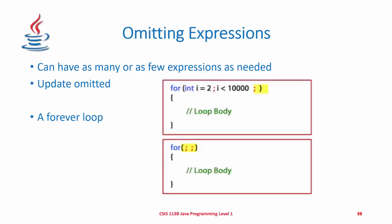You can also omit expressions from the for loop — you just need to make sure that you have the placeholder for all three expressions. In the first example, i is initialized to two and the loop runs as long as i is less than 1000, but the update expression is omitted — you'd need to increment i inside the loop body, otherwise it would be an infinite loop. The last example shows that having no initialization, no boolean test, and no update is actually a legal for loop, but all the mechanics would have to be in the loop body, or it would loop forever.